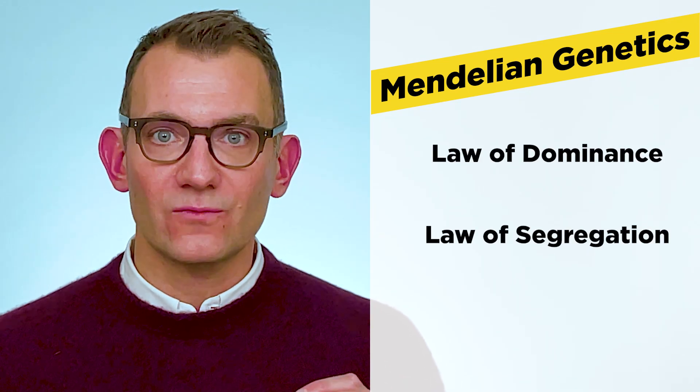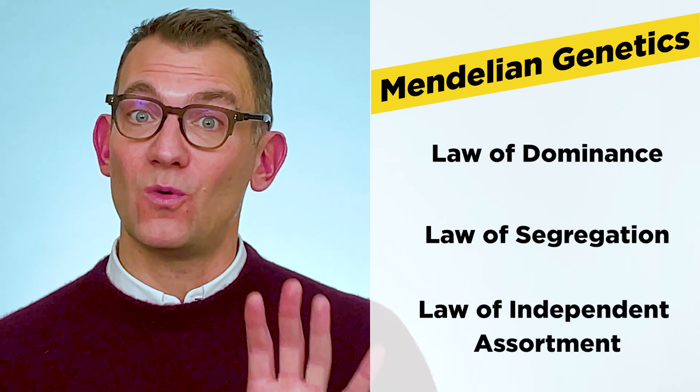Expect to be tested on Mendel's findings and the fundamentals of genetics. This means understanding the definition of traits, genes, diploid vs. haploid cells, alleles, and homozygous and heterozygous organisms, to name just a few. There are also three very important laws in Mendelian genetics — the law of dominance, the law of segregation, and the law of independent assortment. You should know all three cold come test day. You should also review non-Mendelian genetics, which refer to situations in which traits violate Mendel's laws — examples include incomplete dominance, co-dominance, and polygenic inheritance.